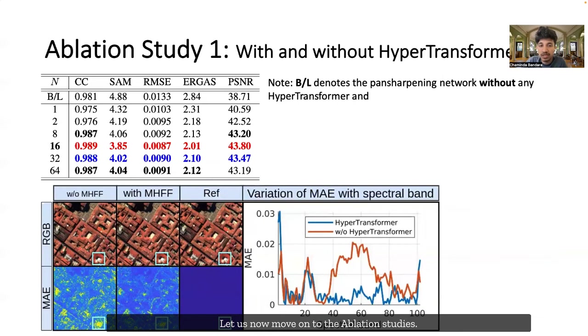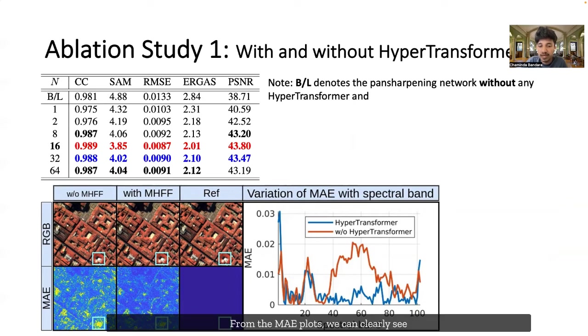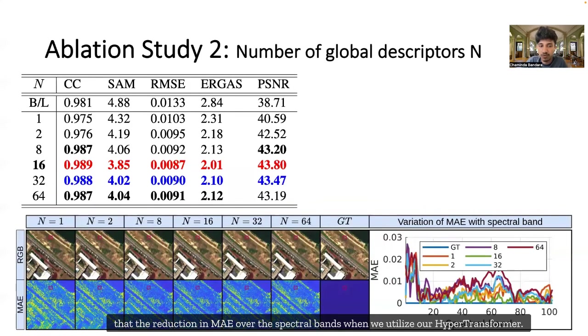Let us now move on to the ablation studies. In this ablation study, we demonstrate the effectiveness of the proposed hyper-transformer on hyperspectral pan-sharpening. We consider the baseline as the pan-sharpening network without the feature attention mechanism. From the MAE plots, we can clearly see the reduction in MAE over the spectral bands when we utilize our hyper-transformer.